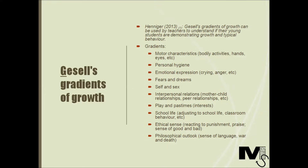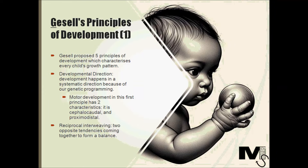Now let's look into the important principles of development that he proposed. Gesell proposed that development of bodily functions happens in an orderly sequence for every child. He proposed five principles of development which characterise every child's growth pattern and should enable one to predict how most children will develop. Let's look at these now, starting with the first principle of developmental direction.